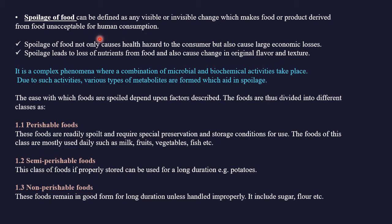Why does spoilage occur? Microbial activity is the main reason, although physical and chemical processes also cause spoilage. Microbial spoilage is very significant. Spoilage of food not only causes health hazards to consumers but also large economic losses. Consider any food manufacturing industry — if sterilization or preservatives are not added correctly, undesirable microbes will start growing, leading to spoilage and economic loss.